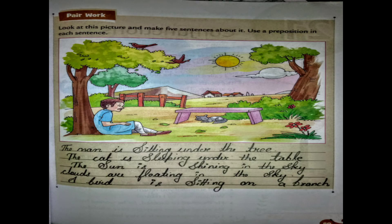Now come to the next exercise: pair work. This is an activity. Look at the picture and write sentences using prepositions. For example: 'The man is sitting under the tree.' 'The cat is sleeping under the table.' 'The sun is shining in the sky.' 'Clouds are floating in the sky.' 'A bird is sitting on a bench.' So here we complete Chapter 20. Thank you.